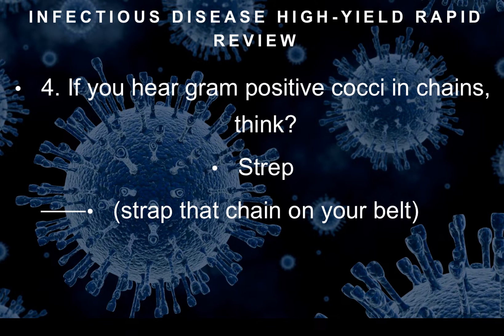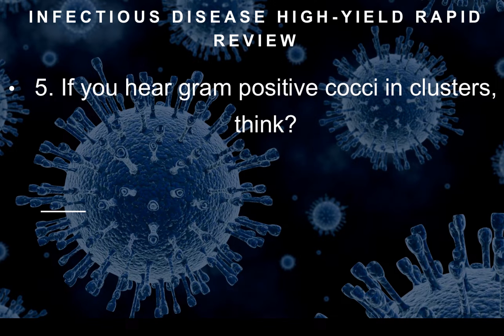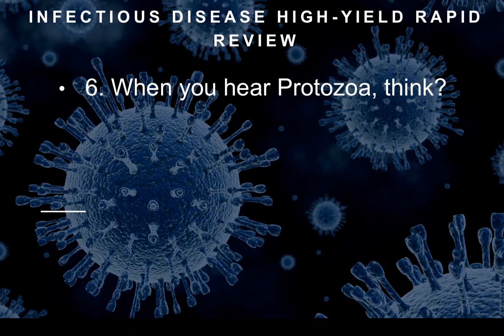Question four: If you hear gram-positive cocci in chains, that is strep. The way I remember this is 'strep chain on your belt' — strep chains. If you hear gram-positive cocci in clusters, that should make you think of staph. So: staph = clusters, strep = chains. Question six: When you hear protozoa, this should make you think of parasites — protozoa are parasites.